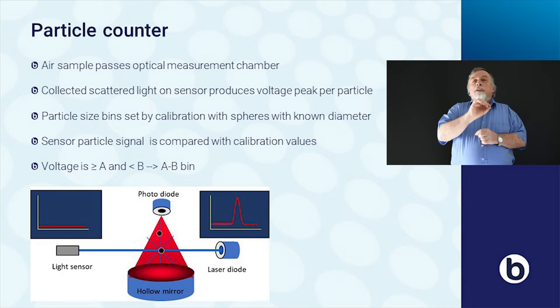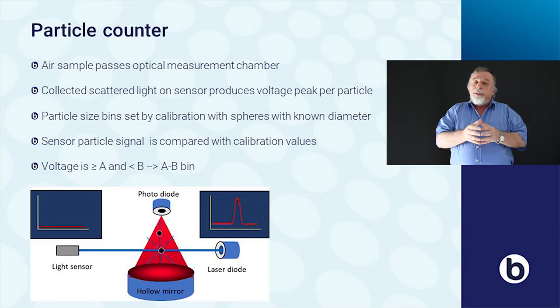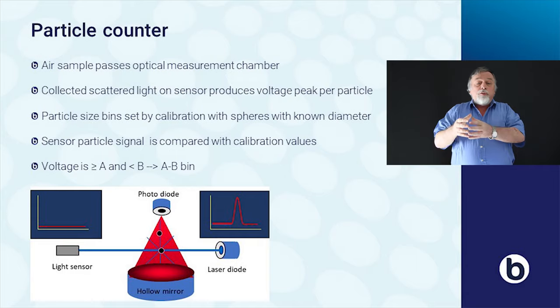Normally a particle counter is calibrated for a number of particle sizes. When you're measuring, the particles are just put into particle size bins — particles between size A and B, particles between size B and C, and so on. This distribution we get we call a differential distribution, and later I will explain how you can make a cumulative distribution of this.